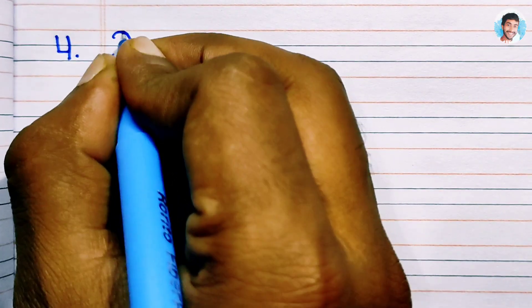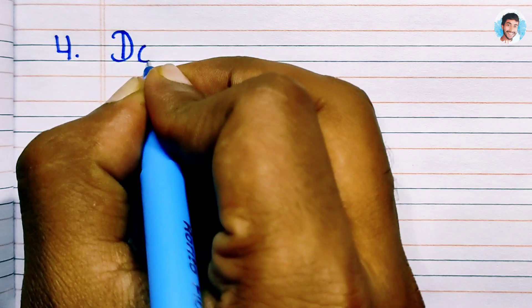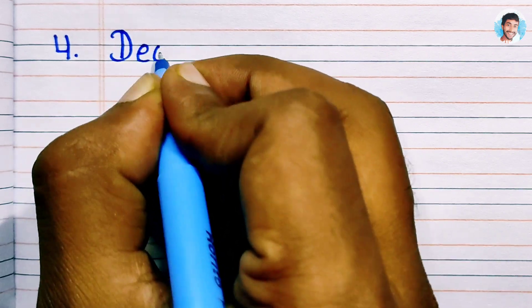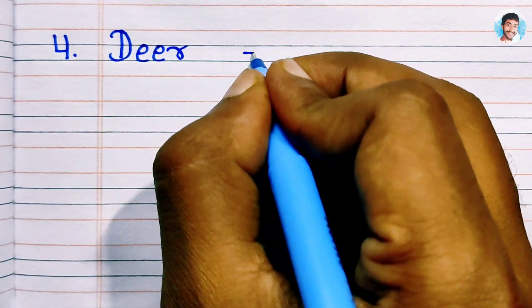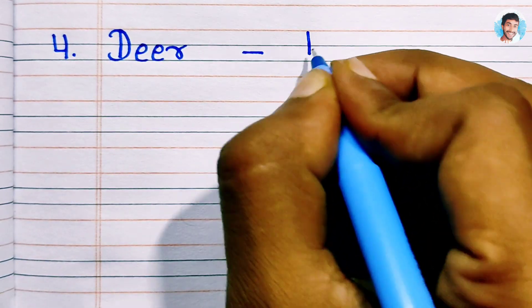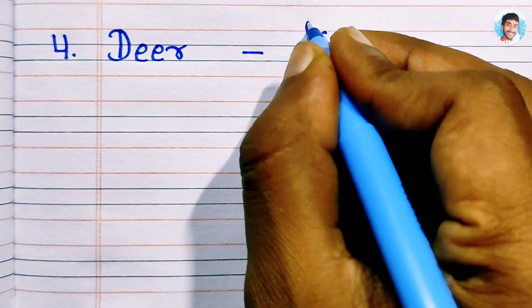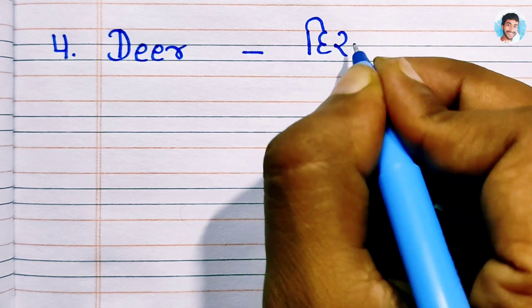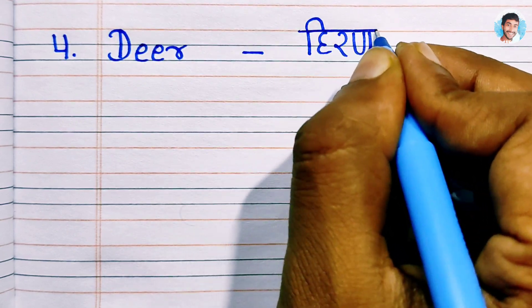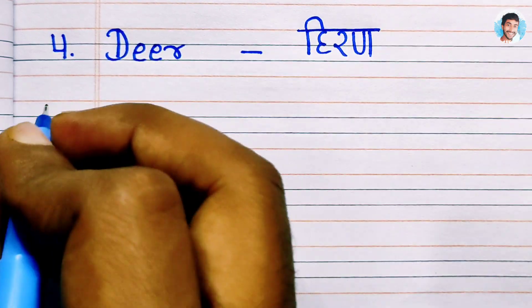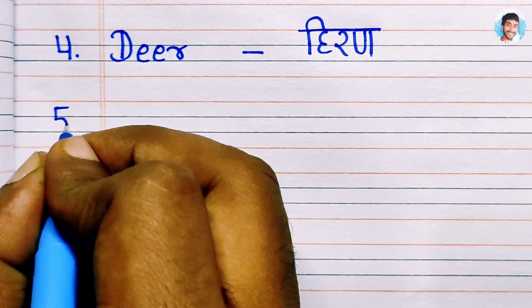Number 4: Deer. D.E.E.R. Deer means hiran.